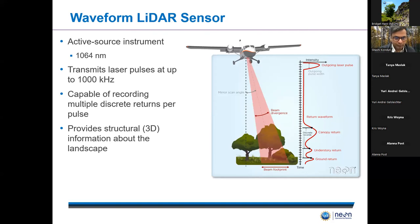Let's focus on this diagram on the right. It shows an outgoing laser pulse at the top, and as the laser pulse travels through the air it will eventually encounter objects. In this example, there are three objects the waveform encounters. The first is a tree, and as the laser pulse hits the tree, some part of it is reflected back to the sensor, as shown by this peak here on the right.